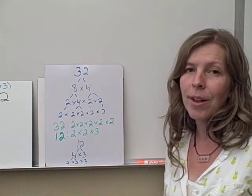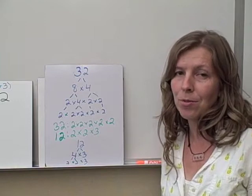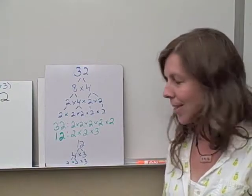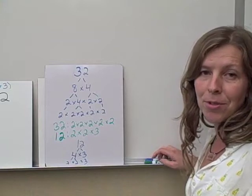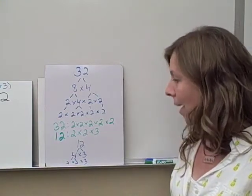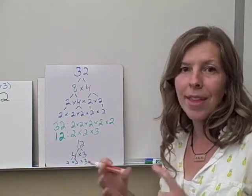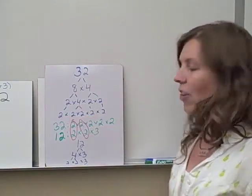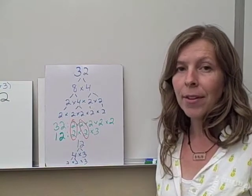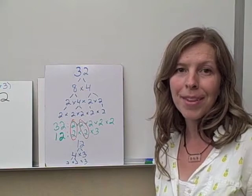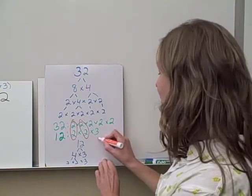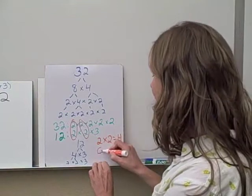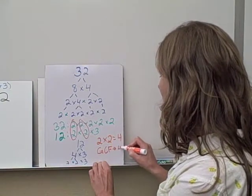So we have the prime factorizations for 32 and for 12, and we did that because we want to find the greatest common factor of 32 and 12. You could have used another method, but since we recently learned this method, I want to give you more opportunities to practice it. Once we find the prime factorizations of the two numbers, we compare them and we circle, we identify what they have in common. So I see two 2s here, I see two 2s here. They share two 2s. To find the greatest common factor, we're going to multiply the numbers in the prime factorization that they share in common. In this case, we're going to multiply 2 times 2, and 4 is our greatest common factor. So the greatest common factor is 4.